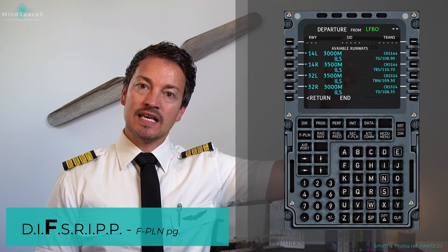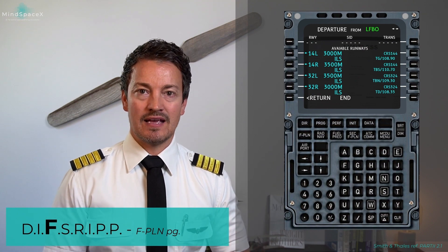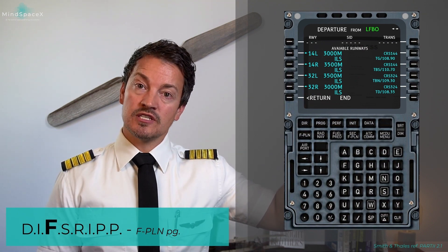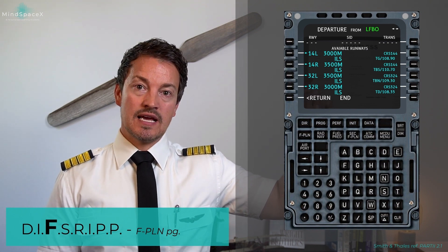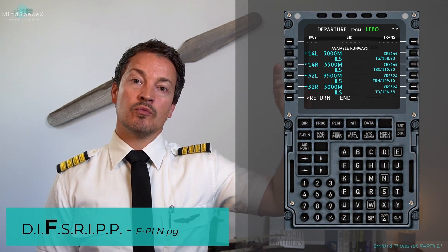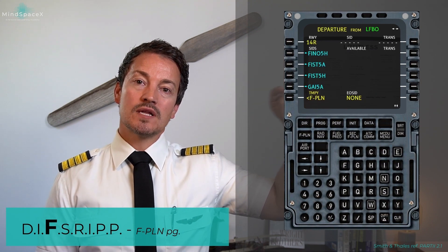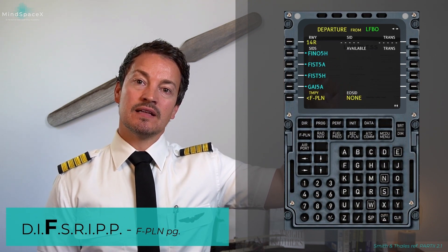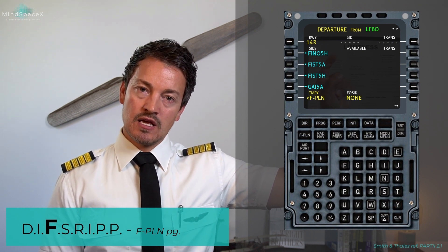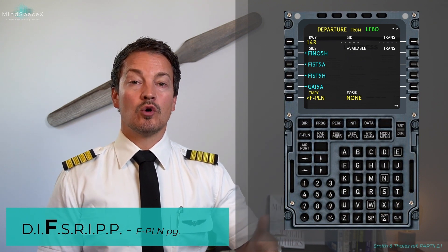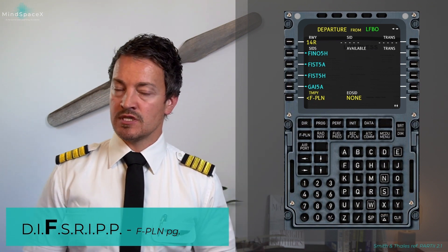Once I select that, it gives a list of the departure runways available for that airport. I will select the departing runway based on my ATIS — for me today, that will be runway 14 Right. Once I've selected that, you can see it put runway 14 Right up here, and it's now asking me: from that runway, these SIDs are available. Which one would you like to fly out from? At large airports, you almost always fly out using an SID.